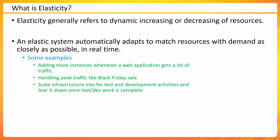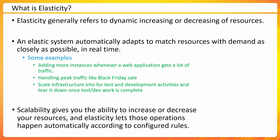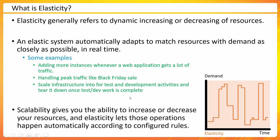How do these two relate to each other? Scalability gives you the ability to increase or decrease your resources; elasticity lets you do those operations automatically according to configured rules. If I plot elasticity on a graph — demand on the Y-axis, time on the X-axis — the graph fluctuates between maximum and minimum, reaching up to the max and coming back down, repeating dynamically. That is what we mean by elasticity.